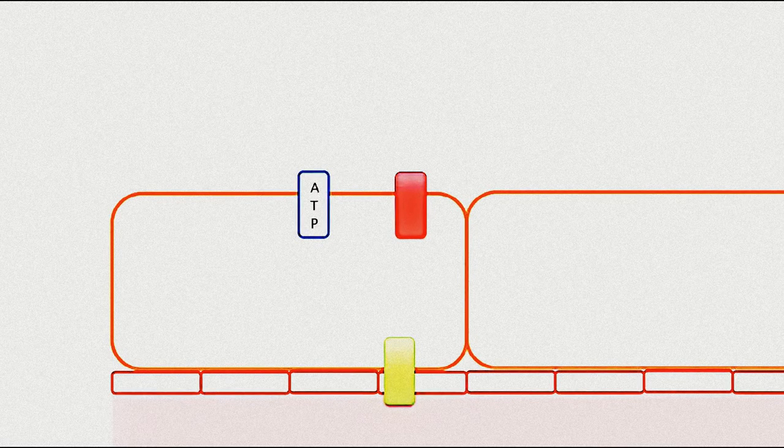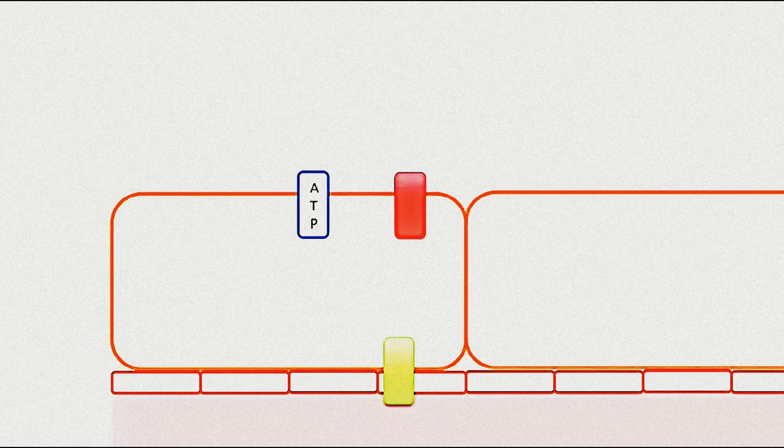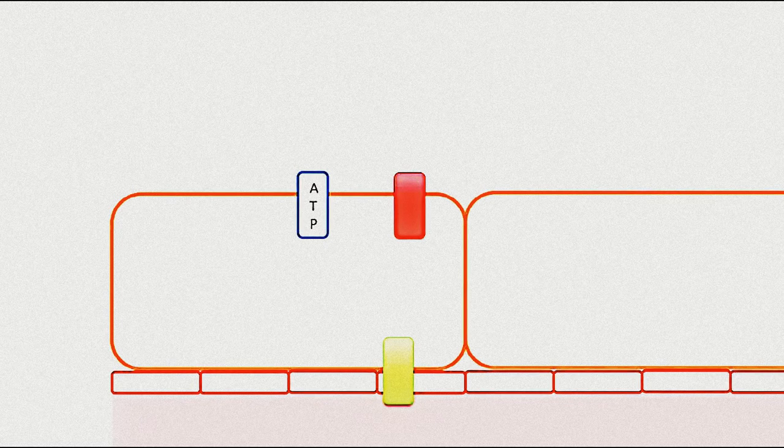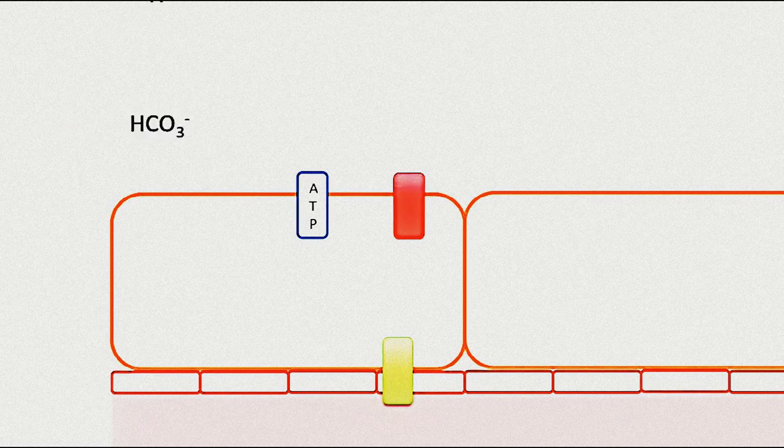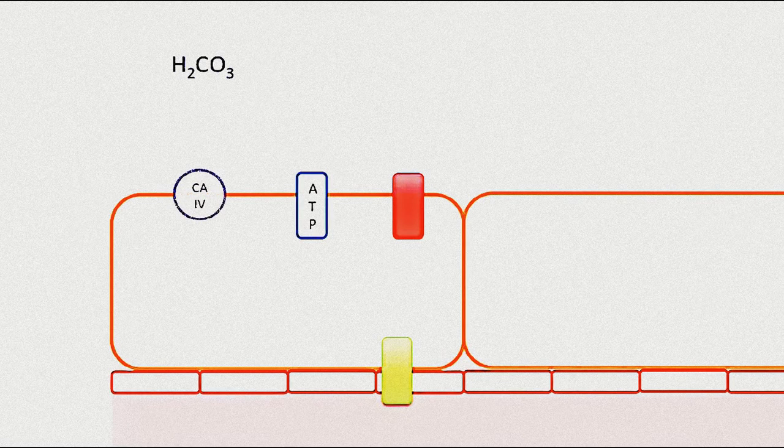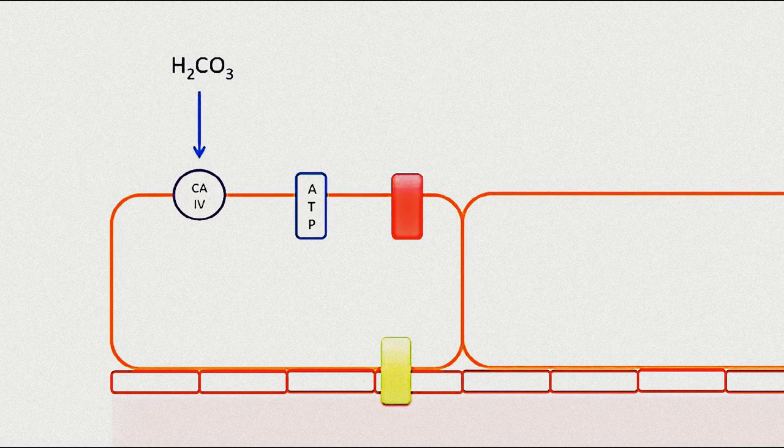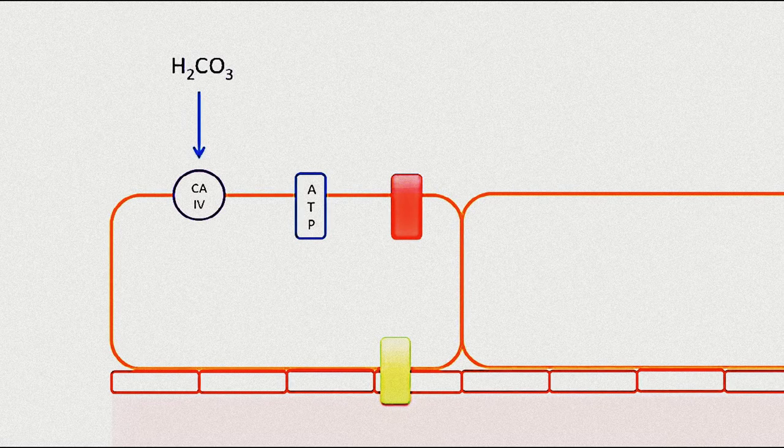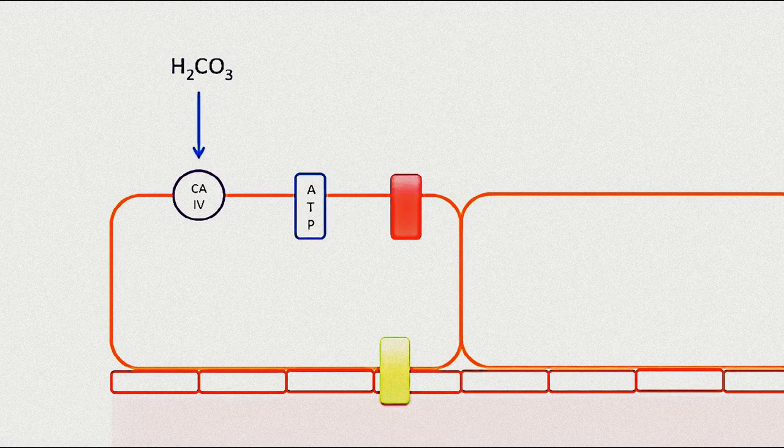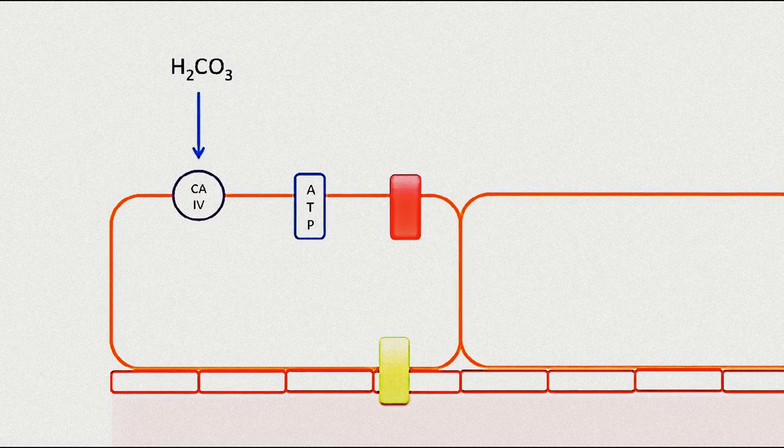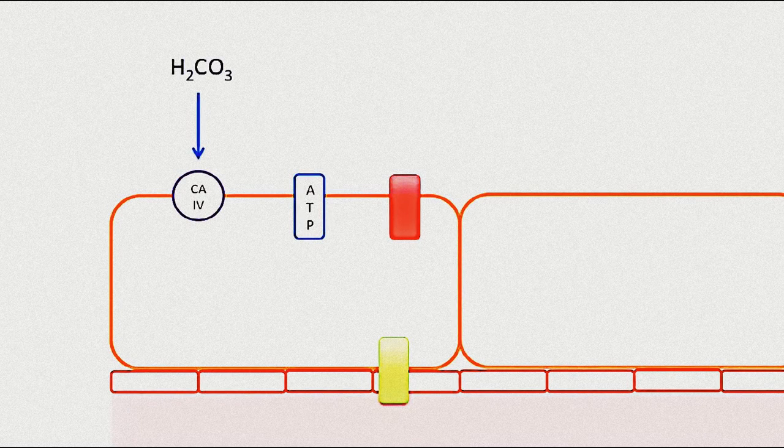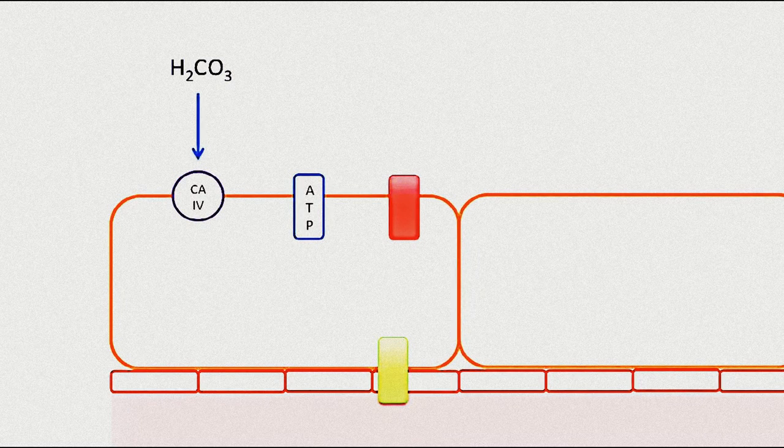At the glomerulus, protons and bicarbonate ions are freely filtered and in the tubule lumen they combine to form carbonic acid. On the luminal side of the tubule wall, the tubule cells have on their surface carbonic anhydrase 4.